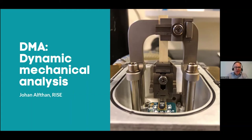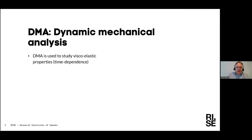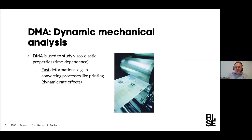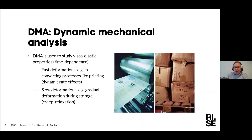DMA is used to study viscoelastic properties — that is, the time dependence of a material. That could be something quite fast, such as rate effects in printing, where you get different properties depending on how fast you run your equipment. Or it could be slow gradual processes like boxes stored for a long time — they look fine initially, but during long-time loading they will start to deform and eventually collapse.